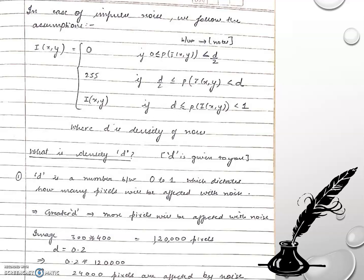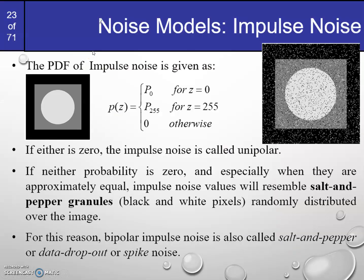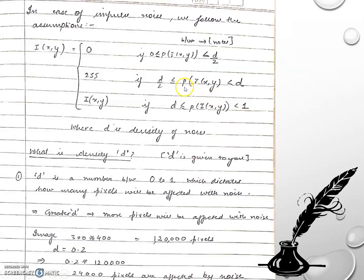In the final image, it's not that a certain intensity like 127 gets added to — instead, 0 is directly assigned to that pixel value. That's why you get black intensities. When the probability lies from d/2 to d, the intensity is assigned 255 directly. So 0 means black — that's the pepper — and 255 means white — that's the salt.